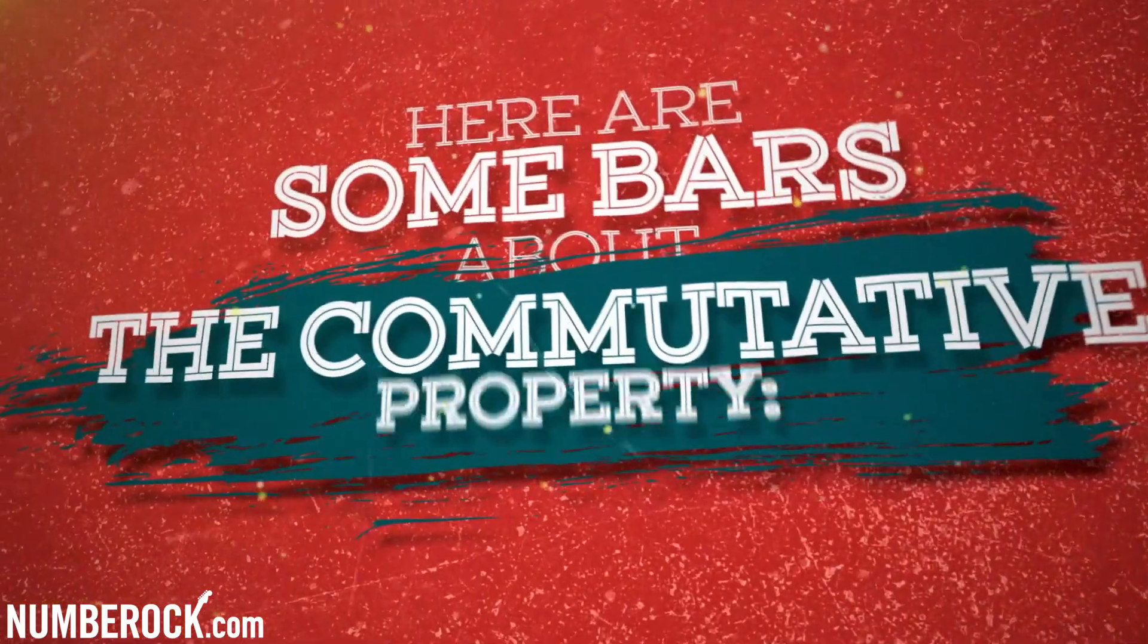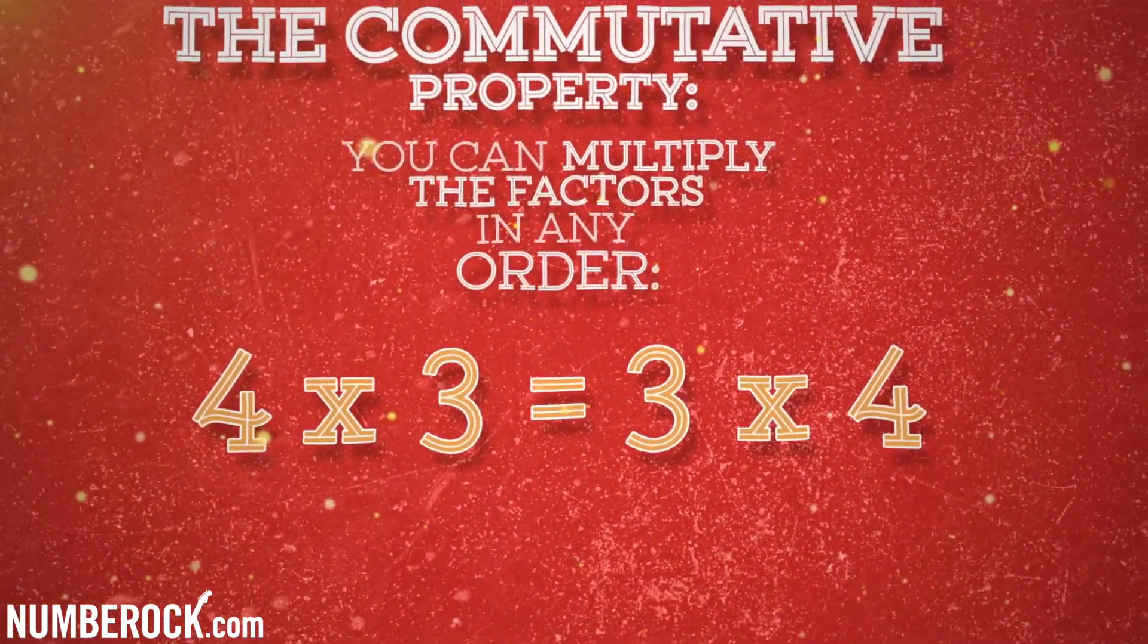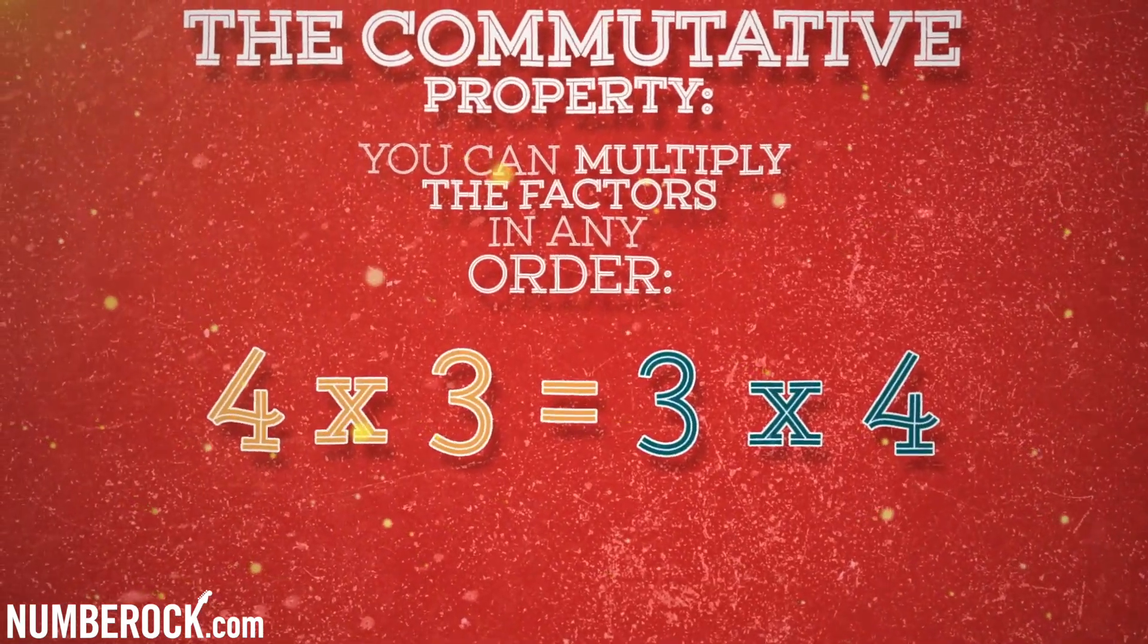Here are some bars about the commutative property. You can multiply the factors in any order, like four times three equals three times four.